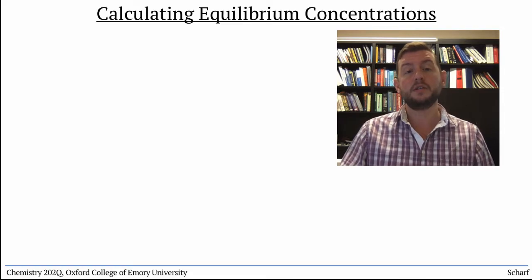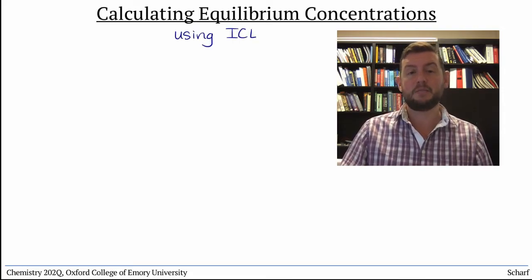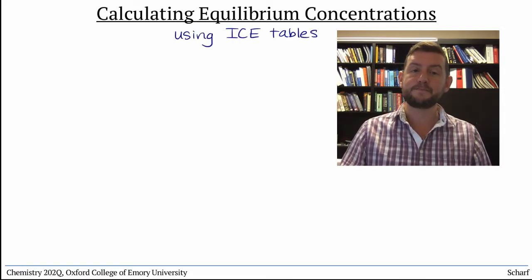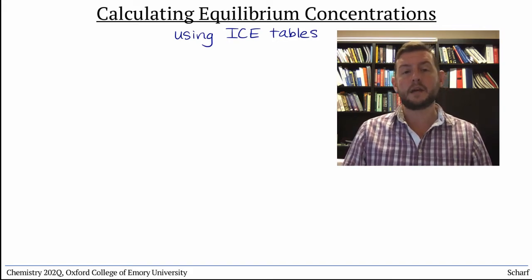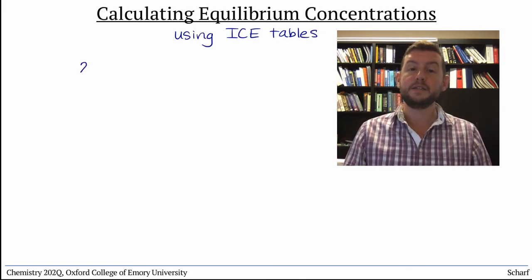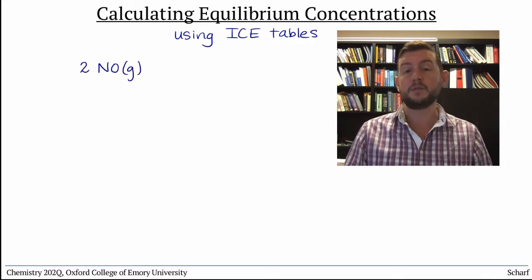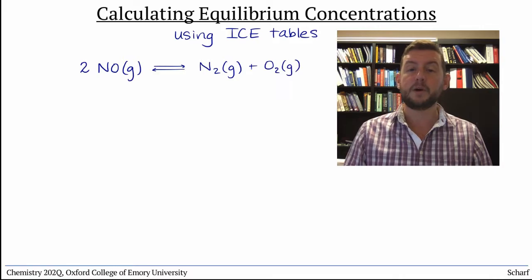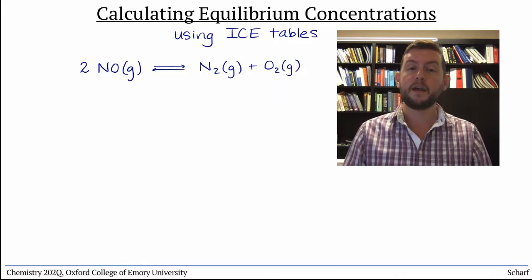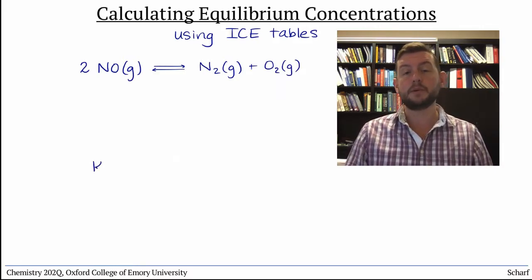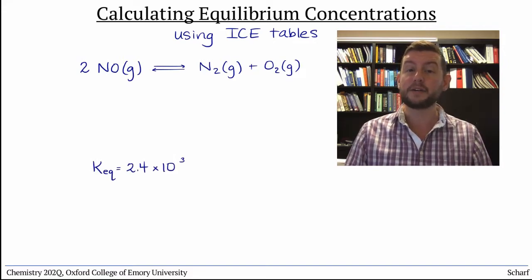The method we use to do this is called an ICE table, and it looks like this. We start with a balanced chemical equation. Let's use the reaction of two molecules of gaseous nitrogen monoxide to produce a molecule of nitrogen and a molecule of oxygen. This reaction has an equilibrium constant of 2.4 times 10 to the 3 at 2,000 degrees Celsius.